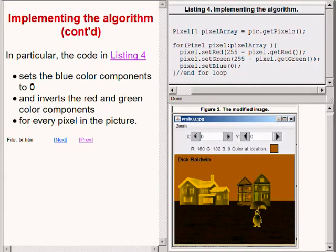In particular the code in listing 4 on the upper right sets the blue color value to zero for every pixel and inverts the red and green color components for every pixel in the picture.